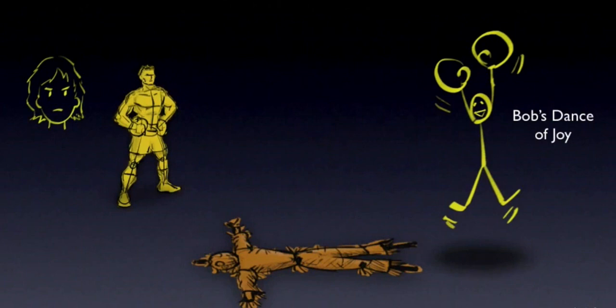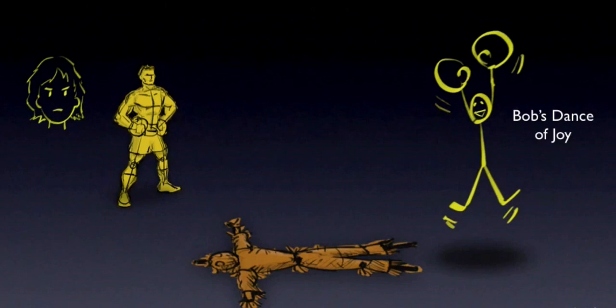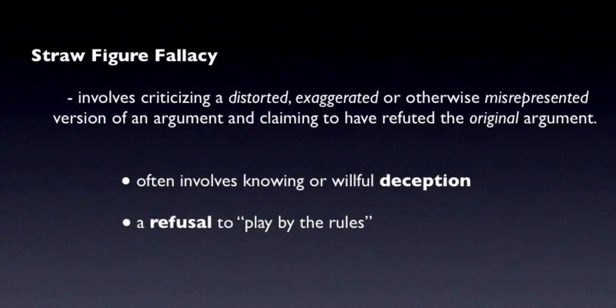But of course, Bob hasn't refuted the original argument — he's only refuted a distorted misrepresentation of it. This is the straw figure or straw man fallacy. This fallacy is often categorized as a fallacy of relevance because the attacks made on the weak straw figure are irrelevant to judging the actual strengths and weaknesses of the original argument. But I prefer to think of it as a violation of the rules of rational argumentation, especially when it involves knowingly and willfully misrepresenting an argument. When someone is willing to do this, they're no longer playing by the rules.